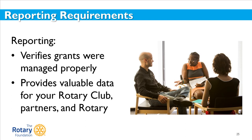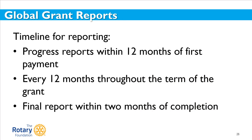Reporting allows Rotary to demonstrate to current and future donors its effectiveness and the impact of its grants. It allows project outcomes for each area of focus to be collected and marketed to Rotary's audiences. Progress reports must be submitted within 12 months of receiving the first global grant payment and every 12 months thereafter. The final report must be submitted within two months of completing the project or the activity. Unused grant funds may be used for additional eligible and foundation-approved expenses, and changes to a project must be approved by Rotary. Any unused funds returned to Rotary will be credited to the World Fund.